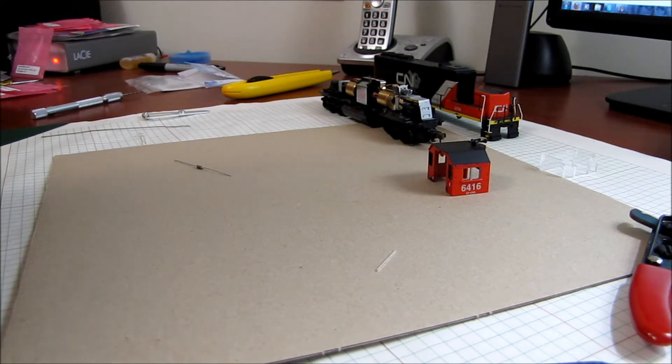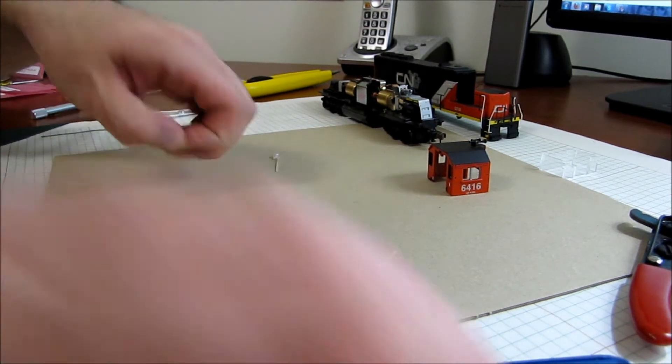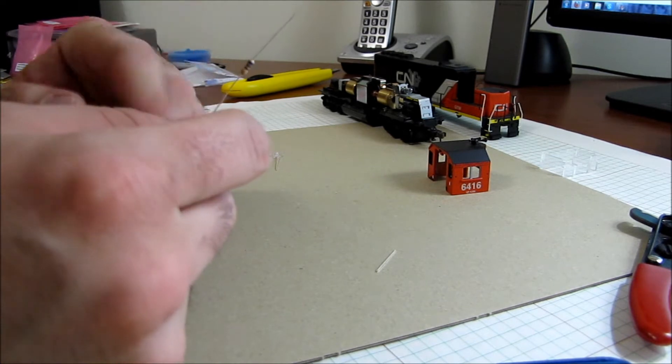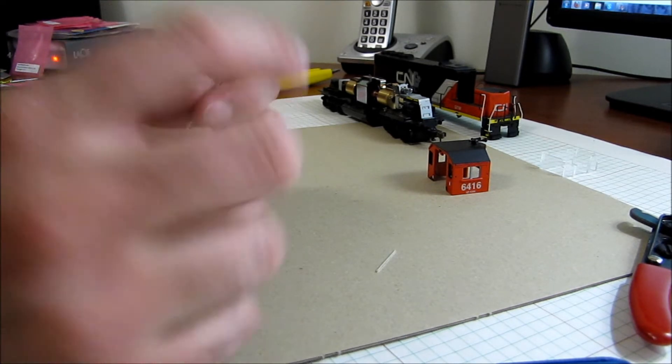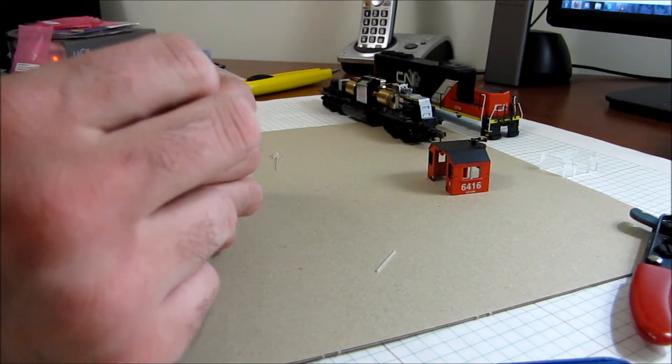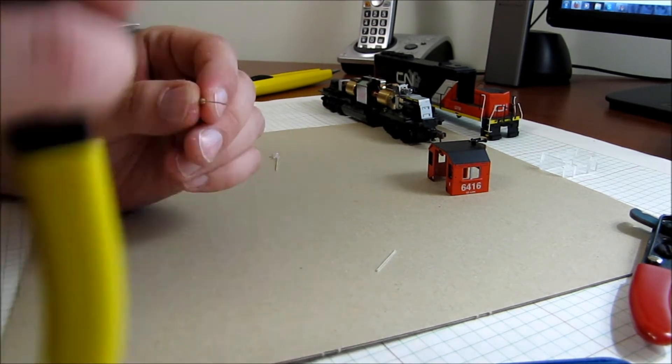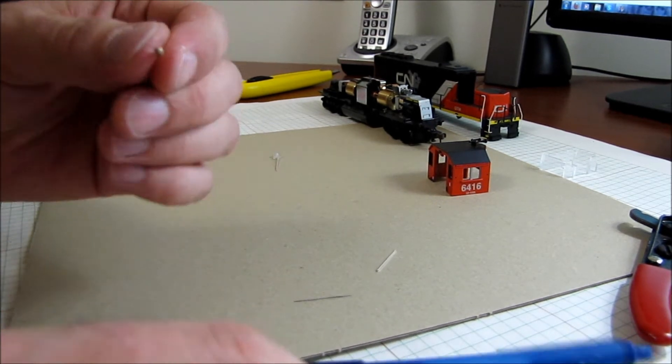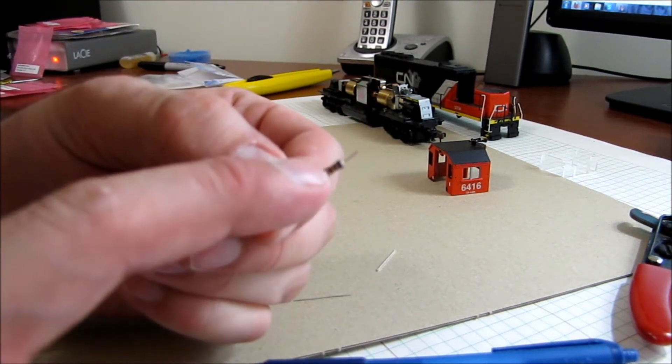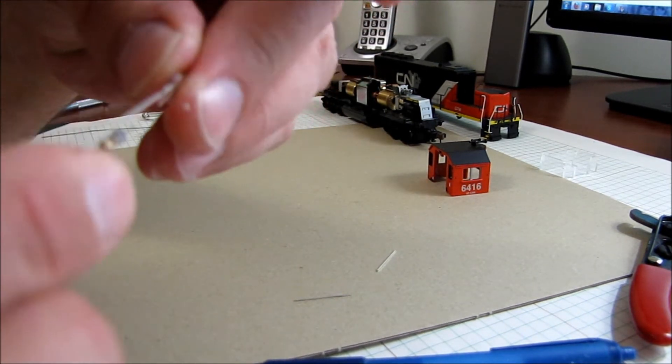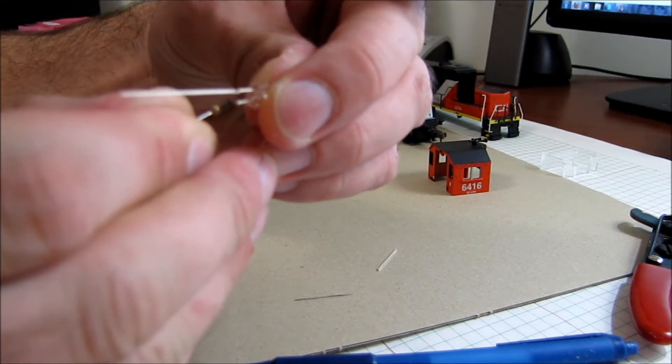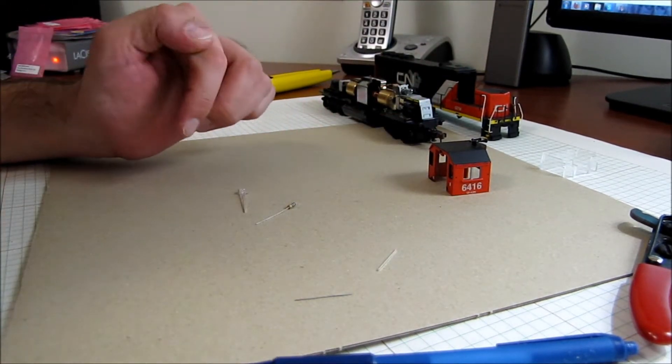We'll cut down that resistor nice and short, and then we will tin these and same with the resistor. Something I'll tell you about a resistor is there is no direction of current or anything on resistors. It doesn't matter how you install them. Now it's going to be the resistor coming right off.